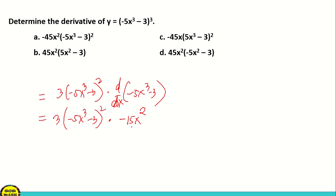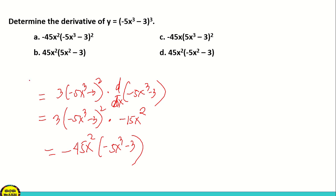Multiplying negative 15x squared by 3 gives us negative 45x squared. Then we copy negative 5x cubed minus 3 squared. So the answer is negative 45x squared times negative 5x cubed minus 3 squared. Based on the choices, that is letter A.